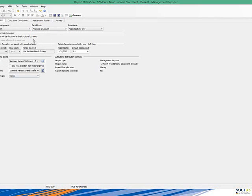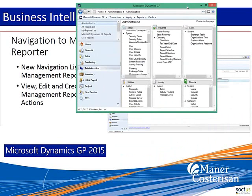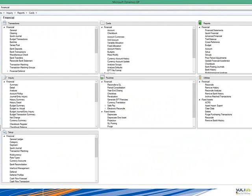If you're still on FRX, which has been discontinued by Microsoft, we should get you converted to Management Reporter. What they have done now is added a navigation list in GP that ties to Management Reporter and lists the individual reports, giving you more control over Management Reporter directly from the GP interface. You'll see on all these area page tabs they've added a new one called Management Reporter Reports.